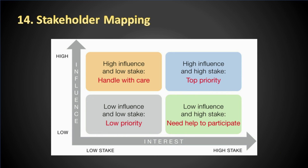Stakeholder mapping is the visual process of laying out all the stakeholders of a product, project, or idea on one map. The main benefit of a stakeholder map is to get a visual representation of all the people who can influence your project and how they are connected.